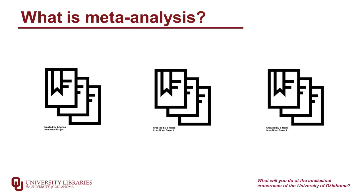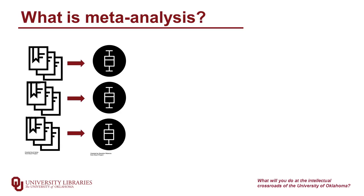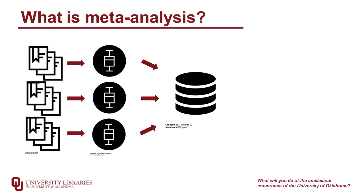A meta-analysis is taking multiple studies and looking at trends found across all of them, not just a single study's result. So it's an analysis of analyses. You're going to take studies that provide an effect size, showing the magnitude of the difference that they found, and this is going to become your dataset.